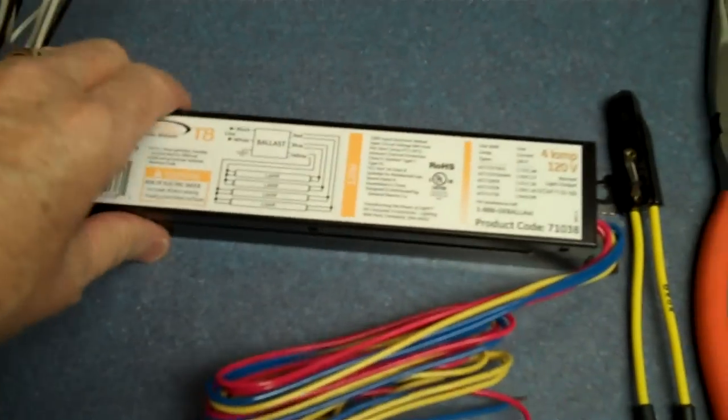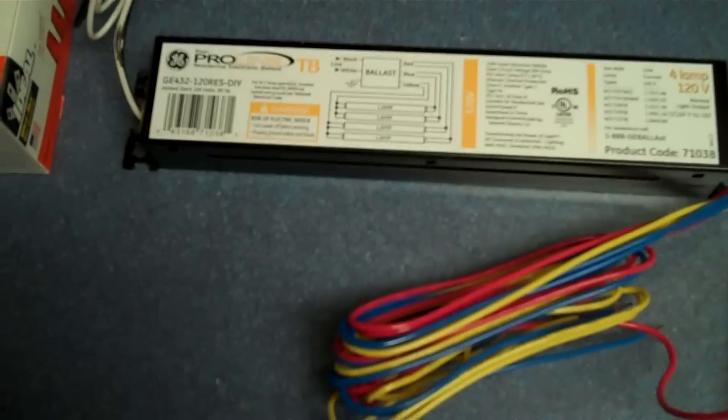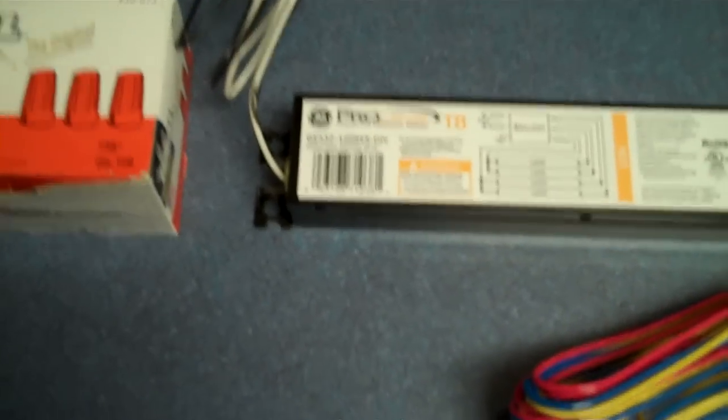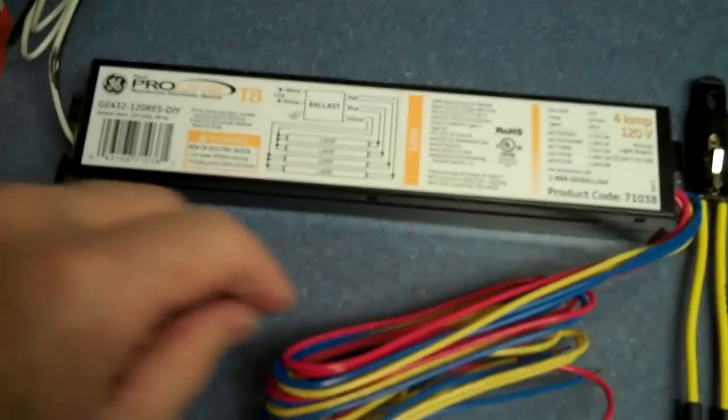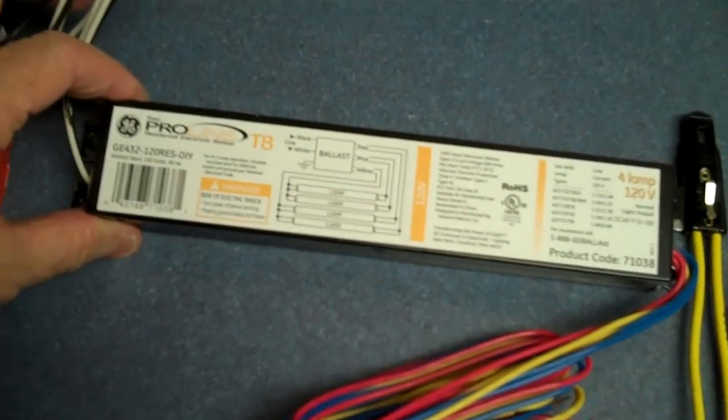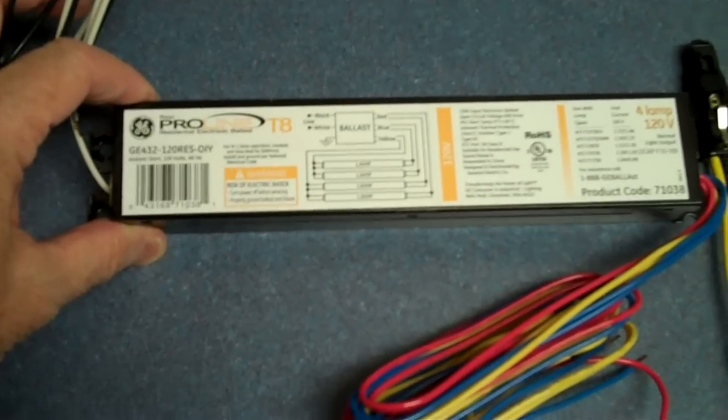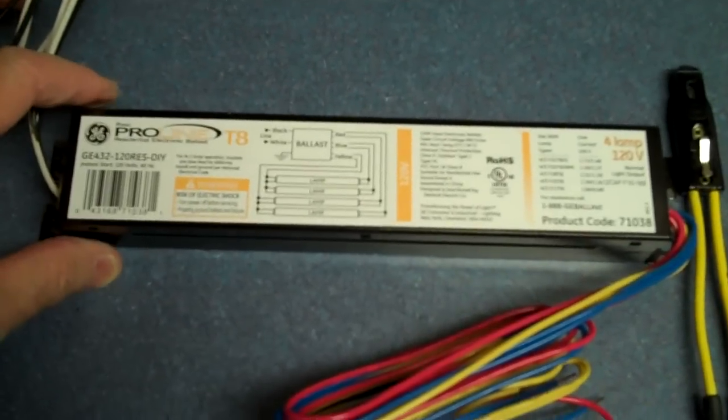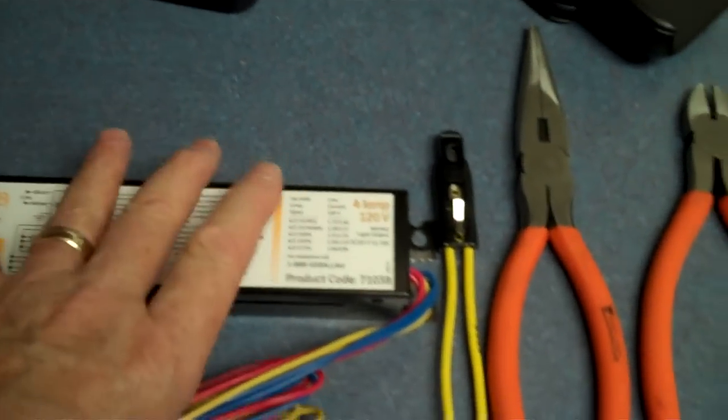All right, one other thing on your ballast. Don't let this guy at the store sell you a ballast you don't need. This is a 120 volt. Don't buy the 270 or whatever high voltage one you need. You don't need that. And like I say this is the GE 432 120 RES/DIY T8. It's for four bulbs. Four lamp T8 bulbs.